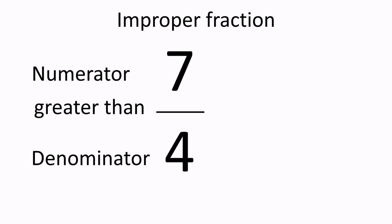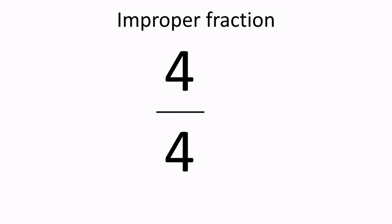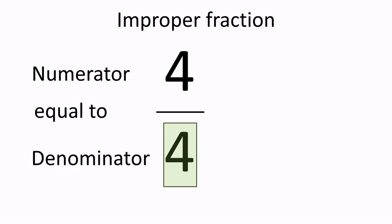What it means is that we are talking about more than one whole. In this example, the denominator — bottom number — is four, so one whole is made out of four parts. However, as the numerator — top number — is seven, we have to look at one whole and three more parts coming from the second whole. In the second case, the top number is the same as the bottom number. When the numerator is equal to the denominator, it is called a whole fraction.